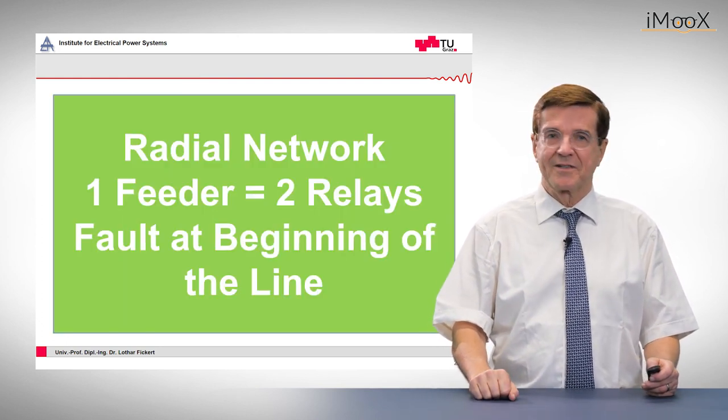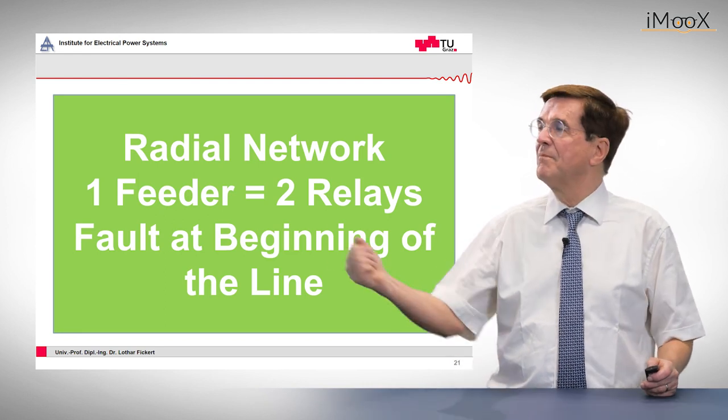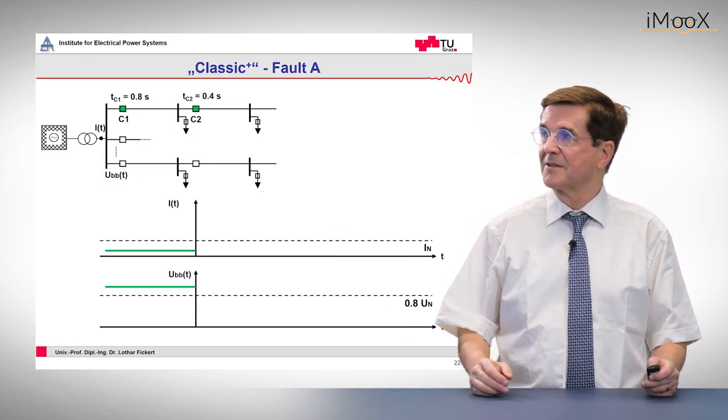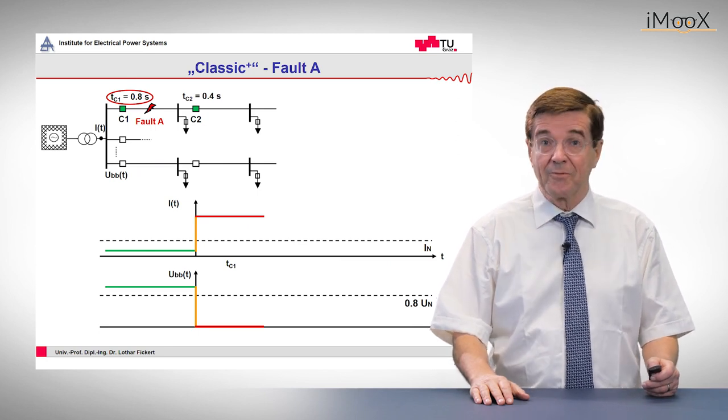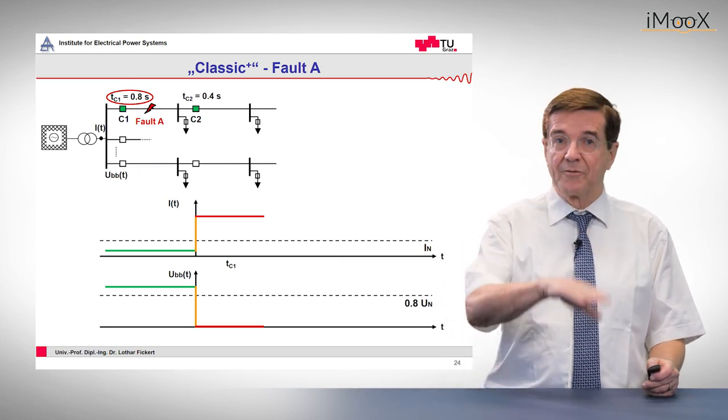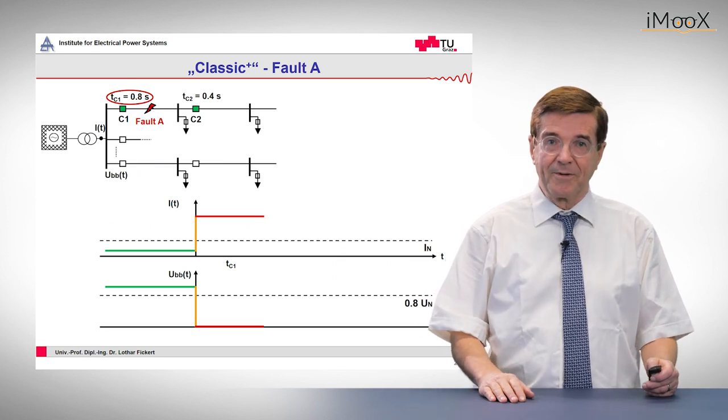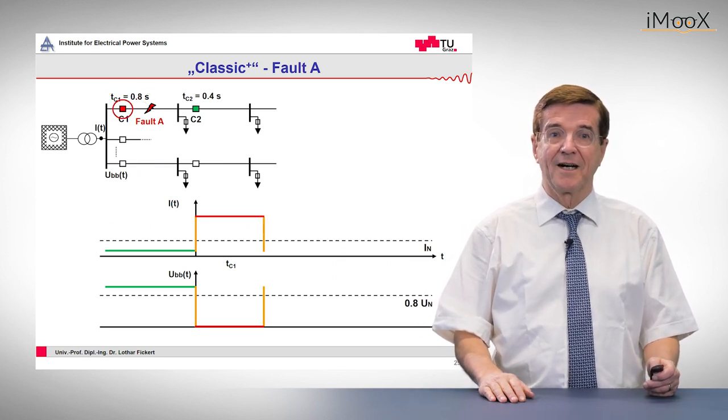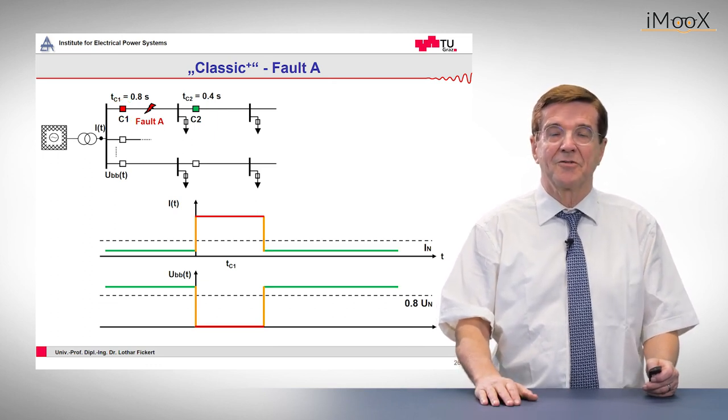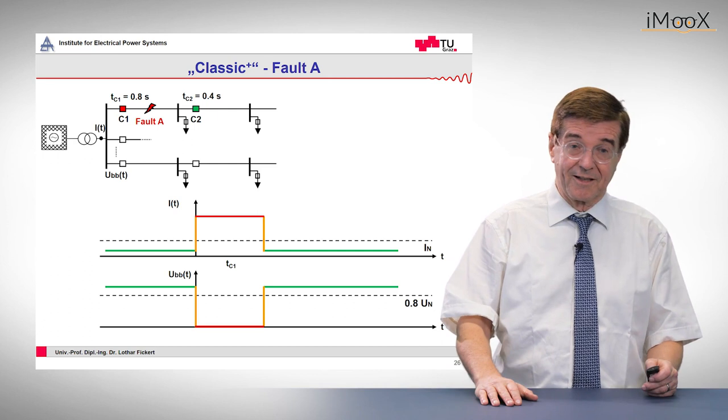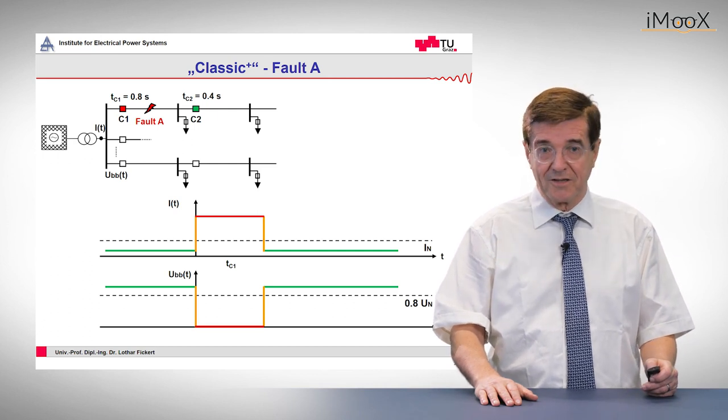What happens if we have the same network but now a fault at the beginning of the line? So again the fault occurs, the timer starts, but now we have, according to the principle of time grading, a higher tripping time of 0.8 seconds. After this, the circuit breaker opens and the whole system is at a regular voltage state at least. But one feeder is lost.